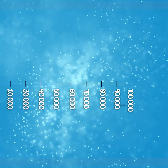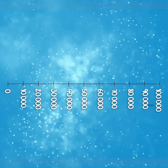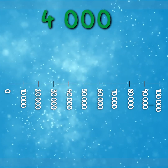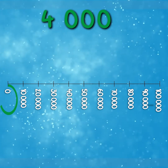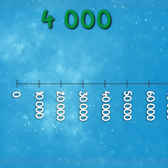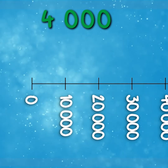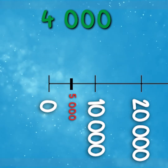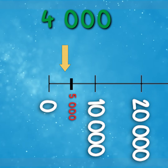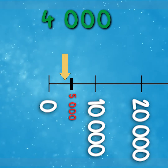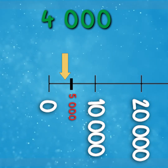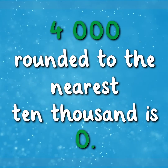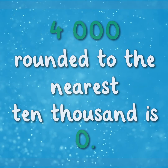For our last number, we will round 4,000 to the nearest 10,000. We already know that 4,000 sits between 0 and 10,000. The midpoint between 0 and 10,000 is 5,000. If we look carefully at the number line, we can see that 4,000 is closer to 0 than it is to 10,000. So therefore, 4,000 rounded to the nearest 10,000 is 0.